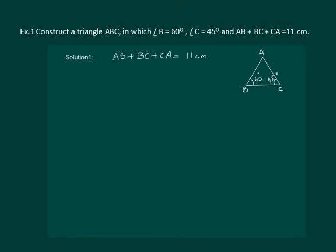So we are required to construct a triangle ABC with angle B equal to 60 degrees, angle C equal to 45 degrees, and perimeter equal to 11 centimeters.